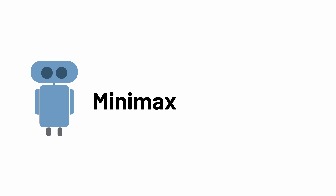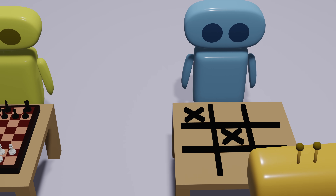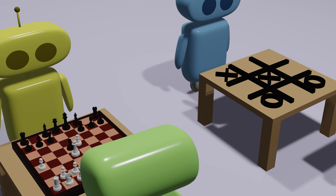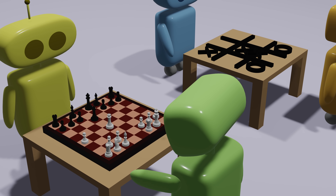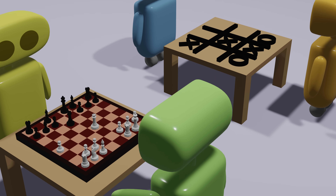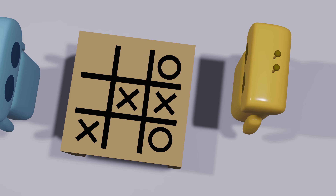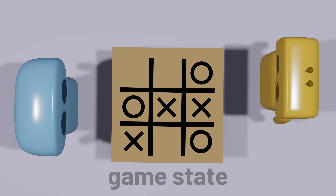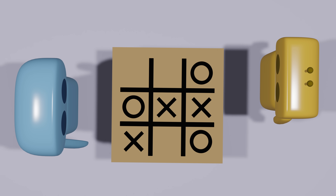Computers are exceptionally good at playing games. Whether it's a simple game like Tic-Tac-Toe or a complex game like chess, computers are excellent at taking the current position in the game, referred to as the game state, and figuring out what the best next move is. But how do computers do it?